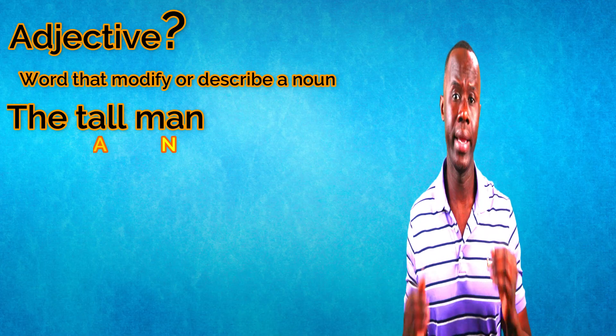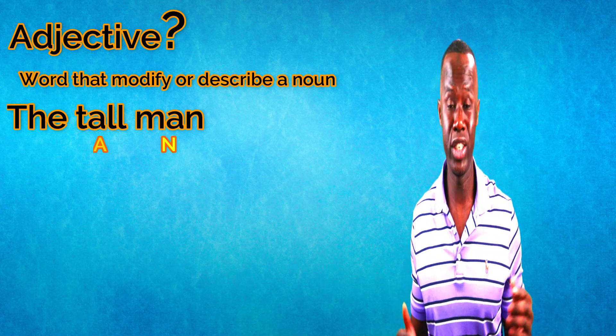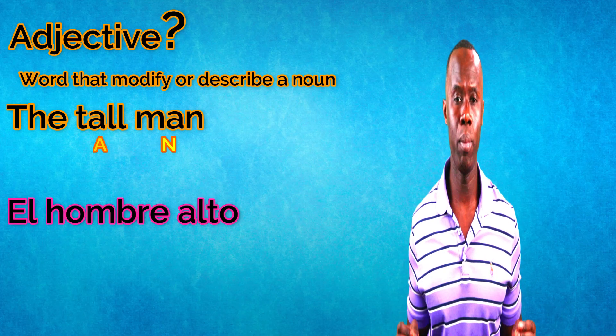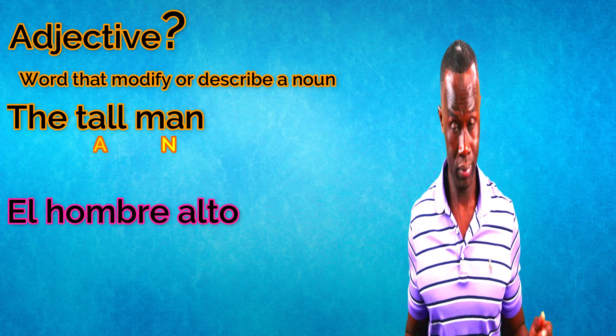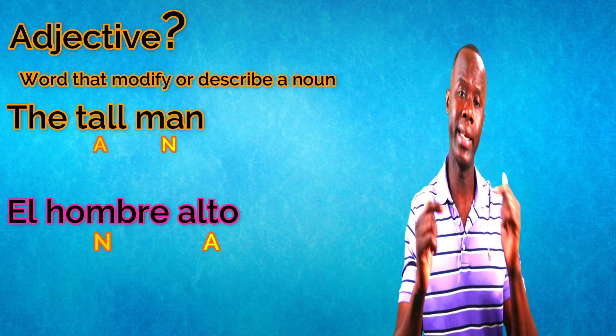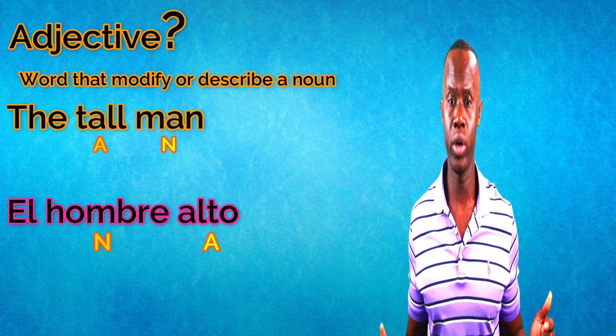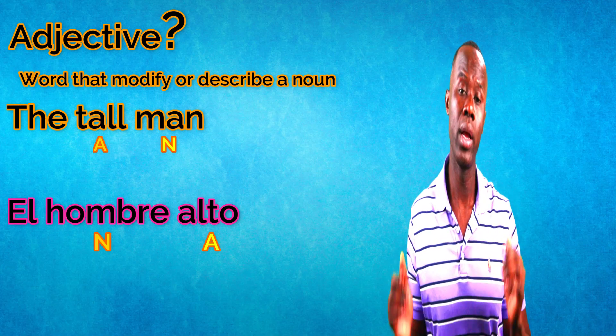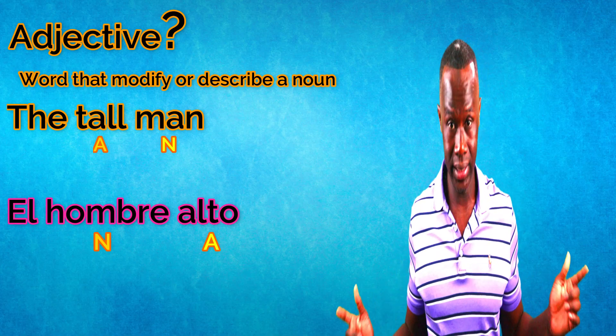In English it's 'the tall man,' but in Spanish it's 'el hombre alto.' As you can see, in English the adjective came before the noun. But in Spanish, the noun came before the adjective. Generally, in Spanish, adjectives are placed after the noun they describe.